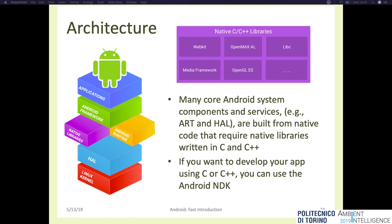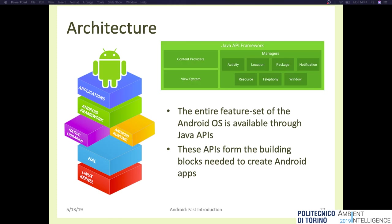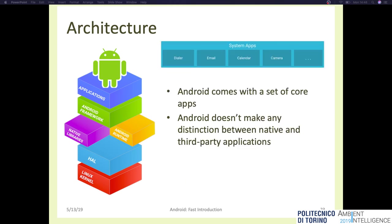The native libraries are mainly developed in C and C++ and provide high-level functionality to upper layers. They include well-known open source libraries such as SQLite, libraries to play and record audio and video, and so on. On top of the Android runtime block and the native libraries there is the Android Software Development Kit — the one you will use to develop your applications. It provides Java methods to access all Android functionality. Finally, the last layer is composed of Android user applications, which are executed in separate processes.